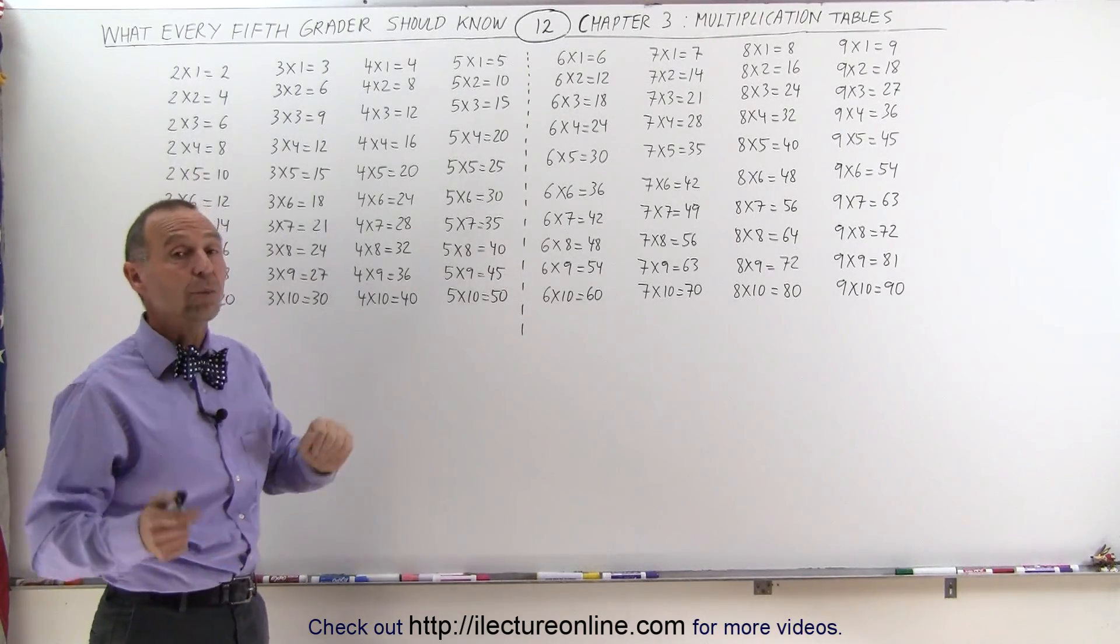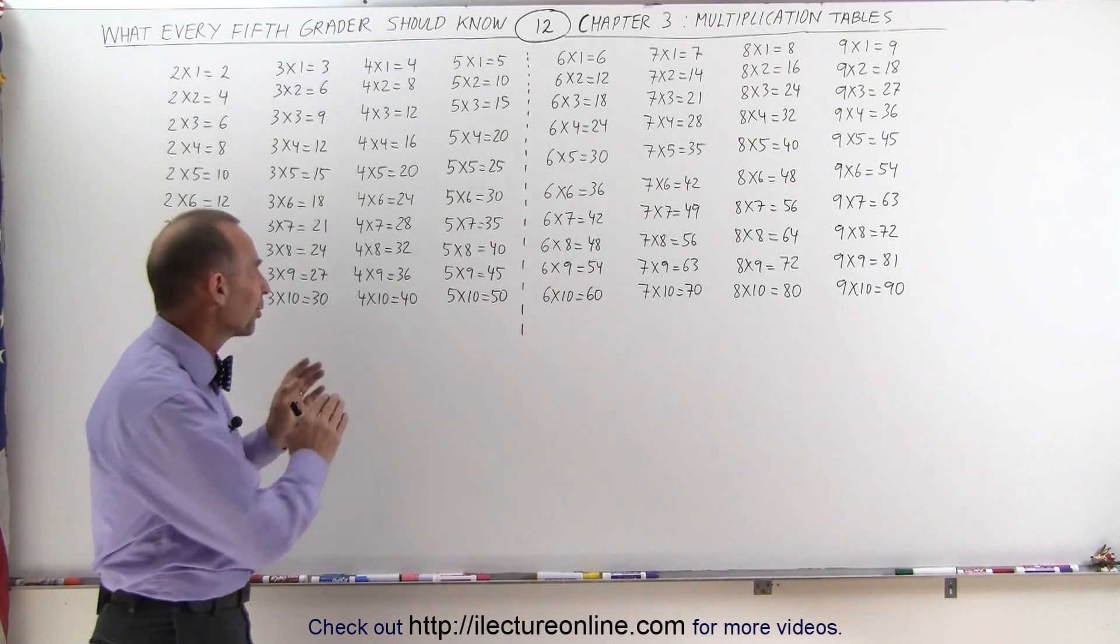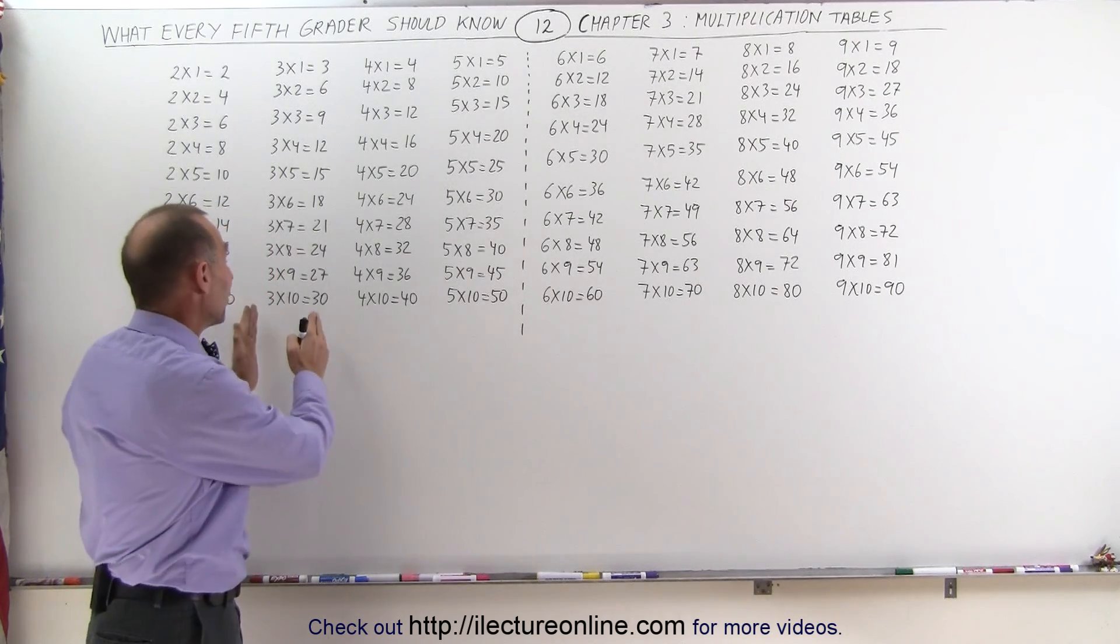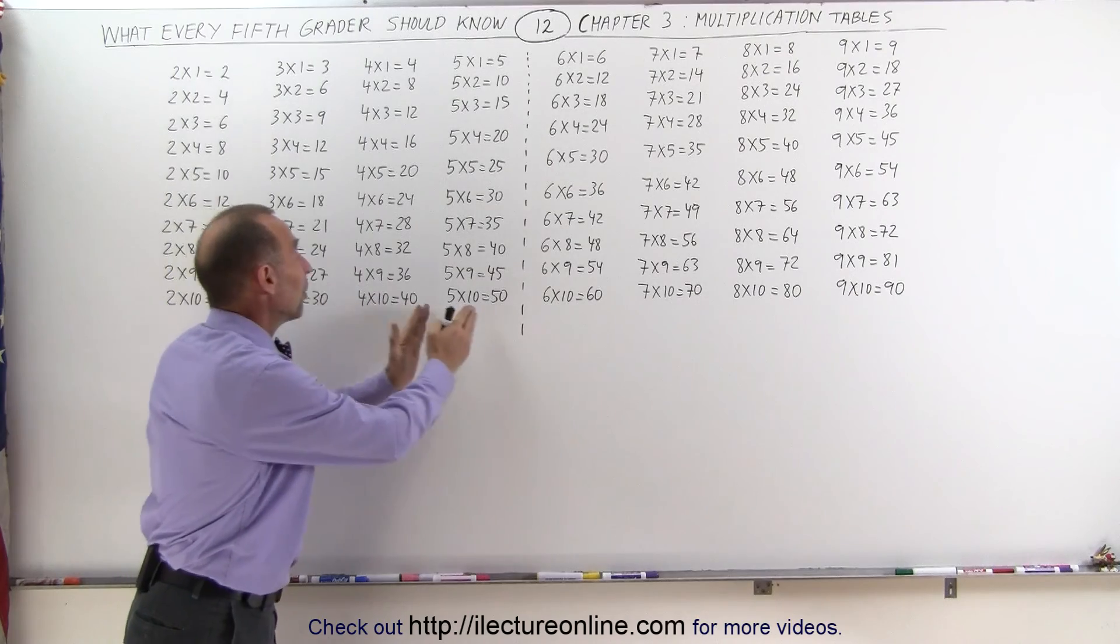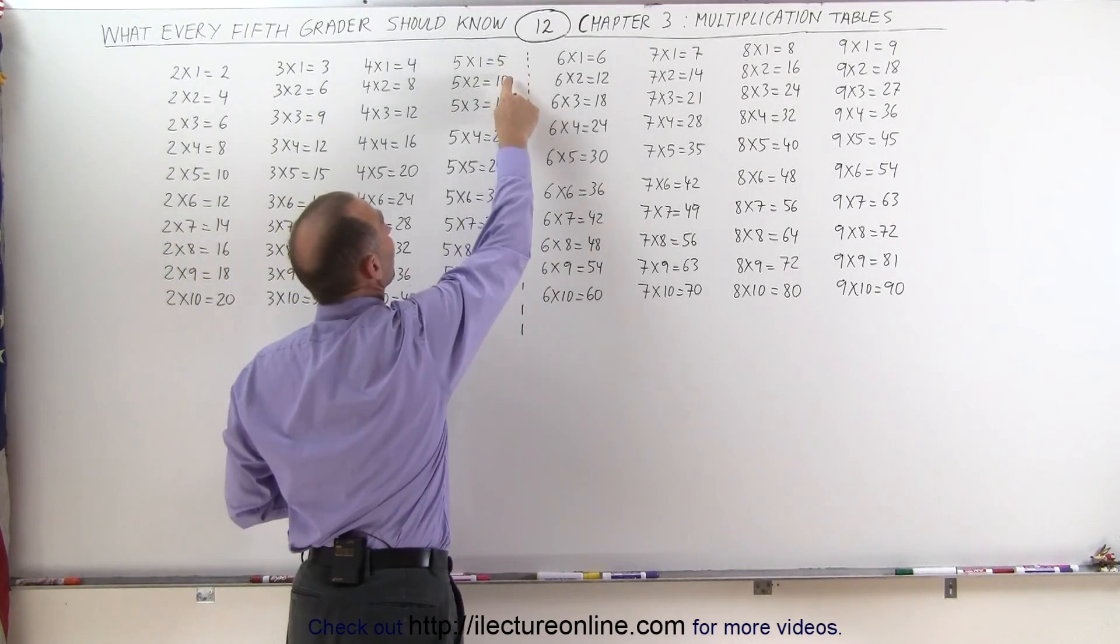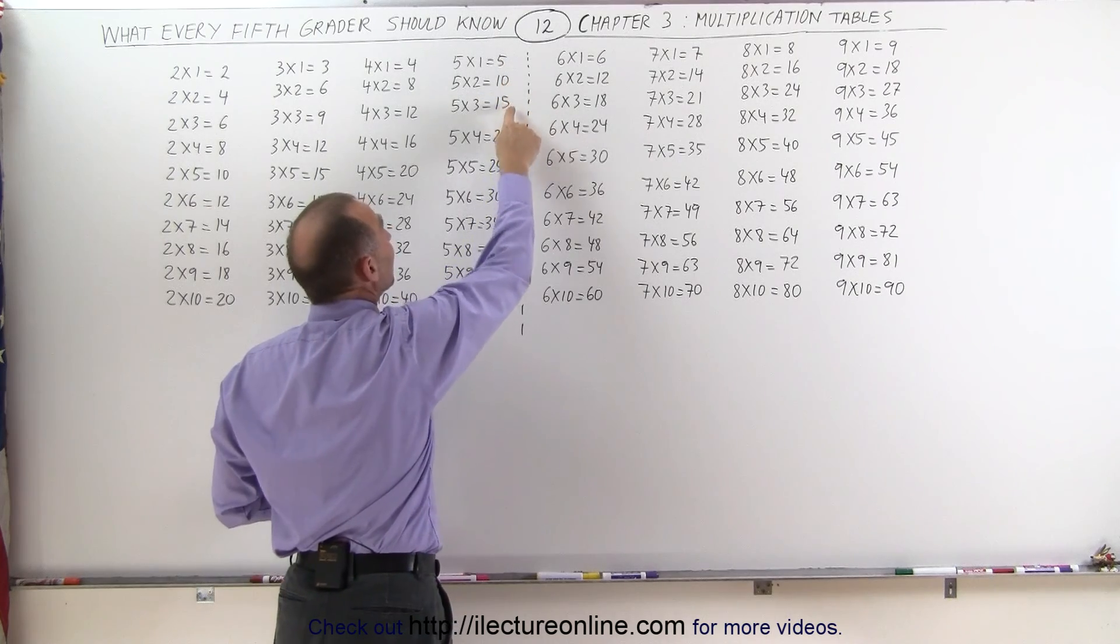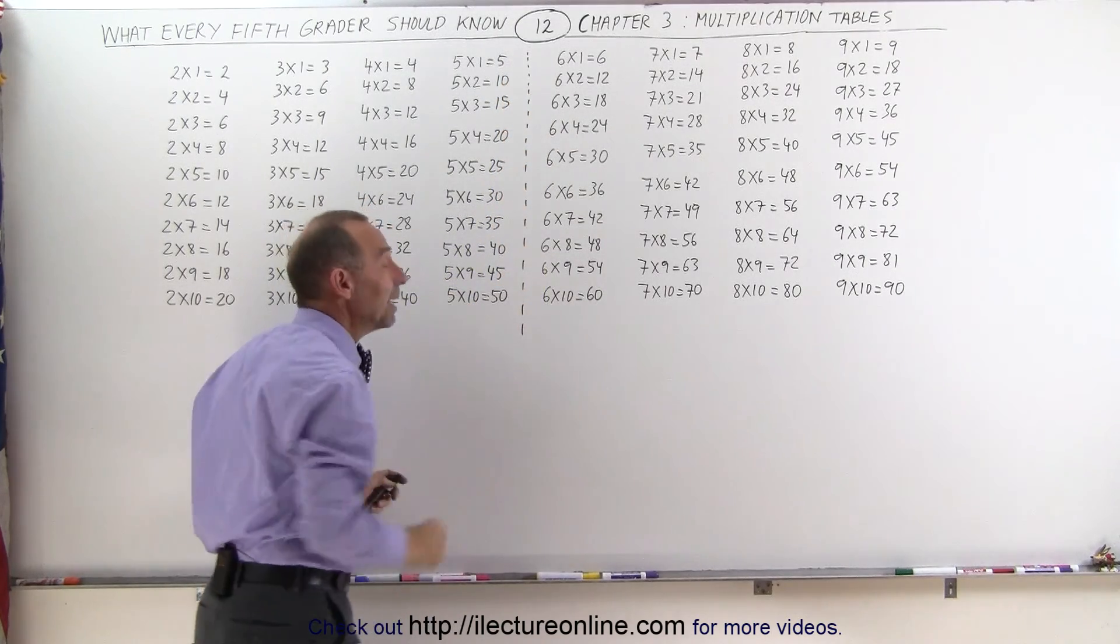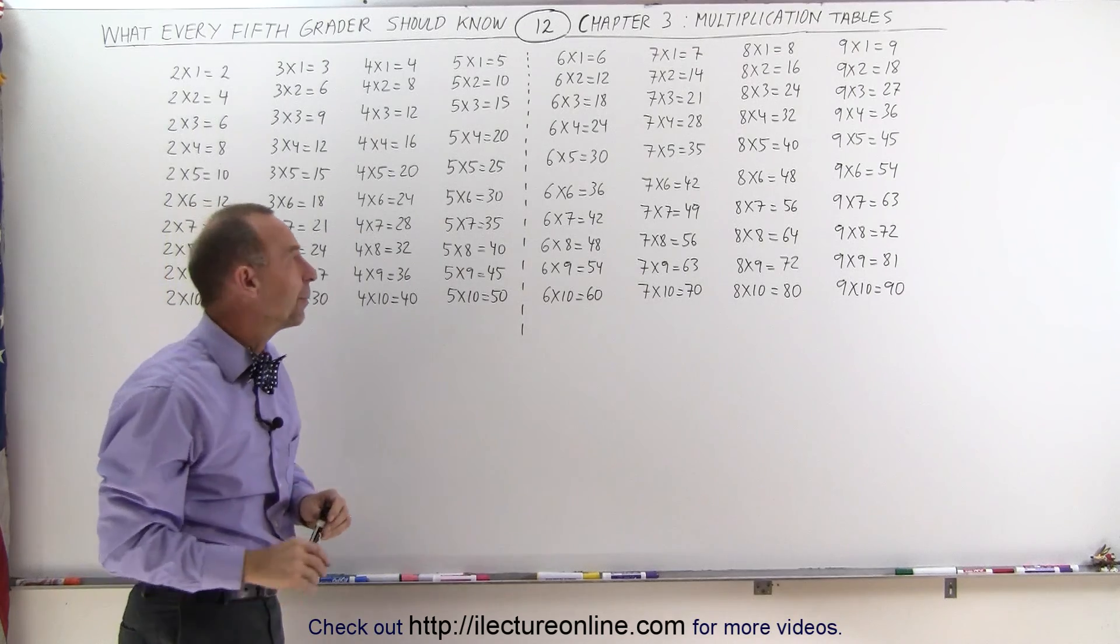Multiplying times 5 is also really easy. Notice I did skip multiplying times 4, but when I jump from multiplying with 3 to multiplying by 5, notice that each answer either ends in a 5 or a 0: 5, 10, 15, 20, 25, 30, 35, 40, 45, 50, and those are also easy to remember.